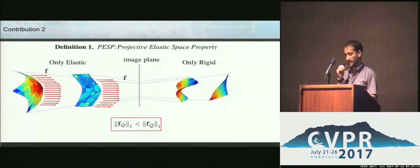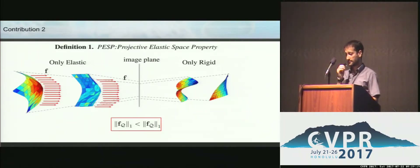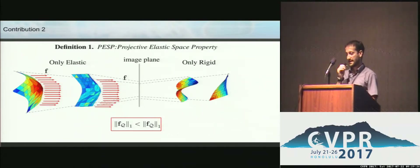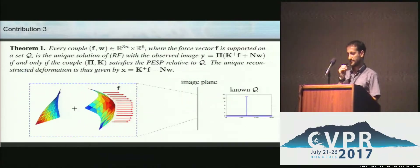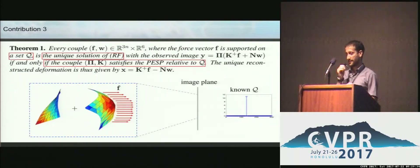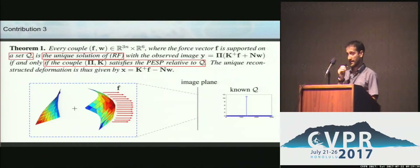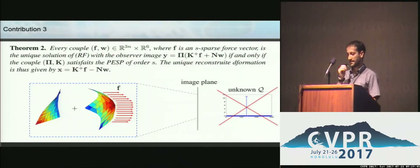We define the projective elastic space property, which states that if we have a pure elastic deformation that lies on the same image plane as a rigid elastic deformation, then if this property is satisfied, we are able to recover both the ground truth force and the ground truth rigid placement of the non-rigid object on the image.